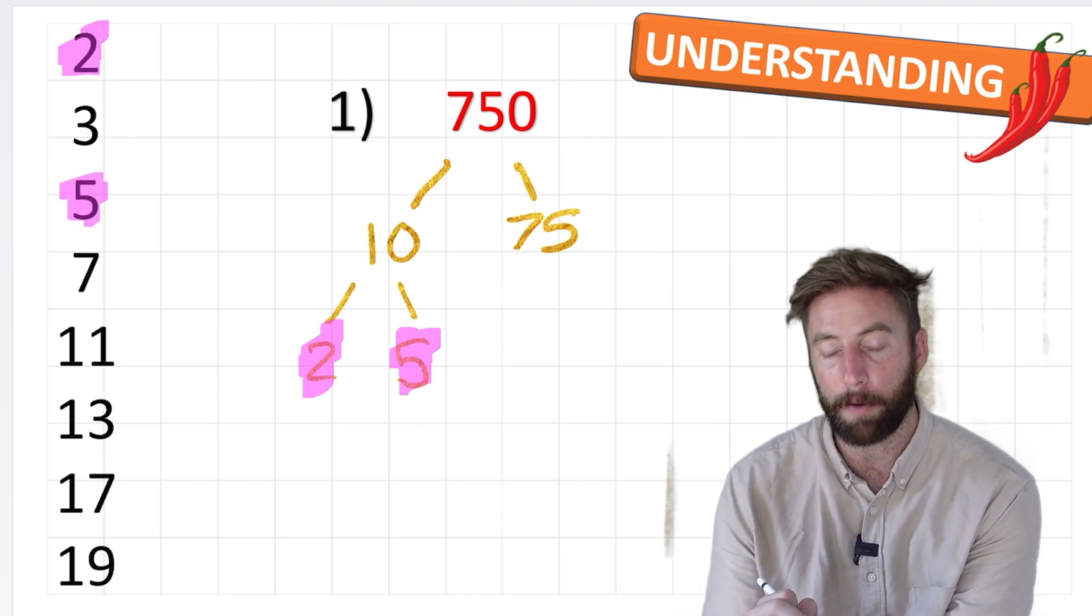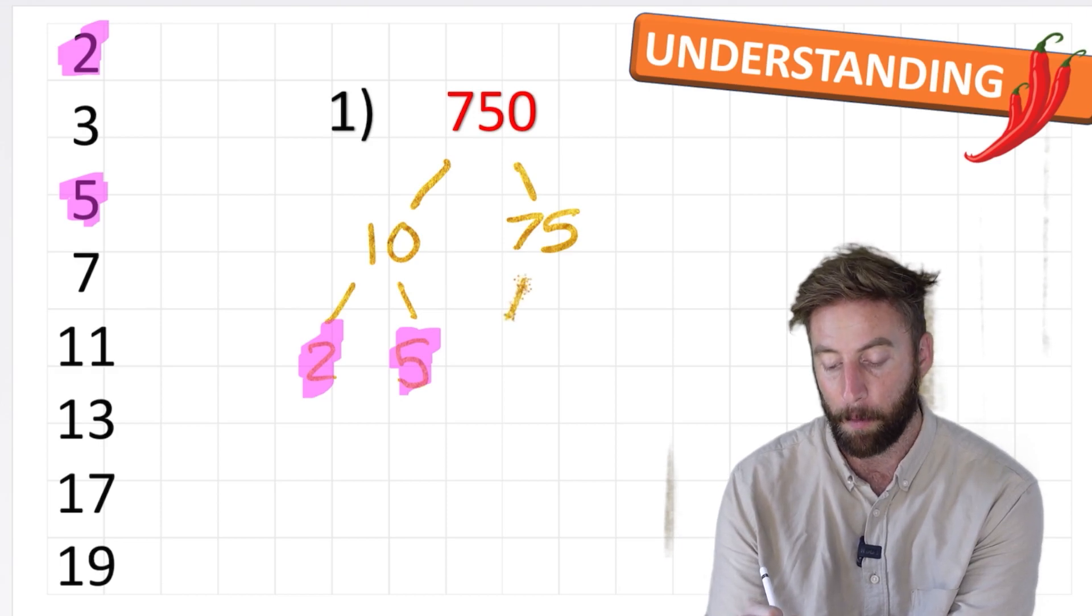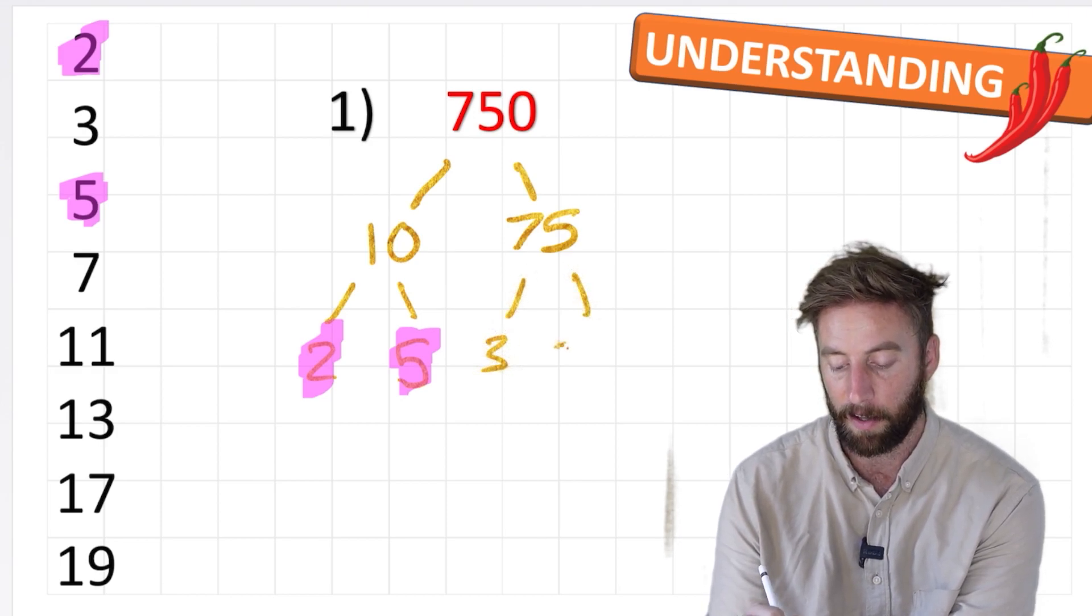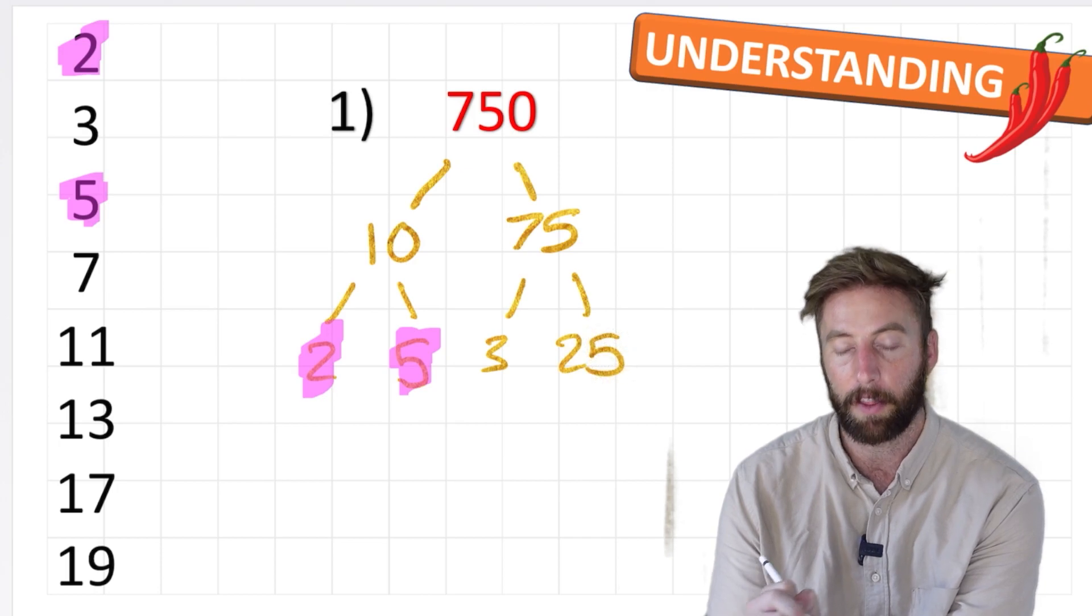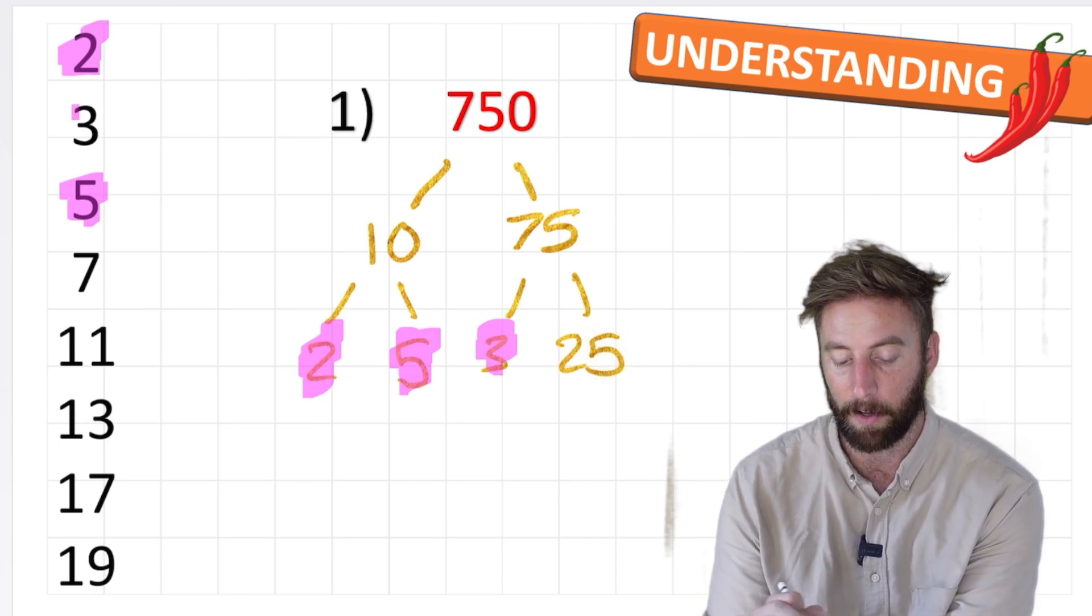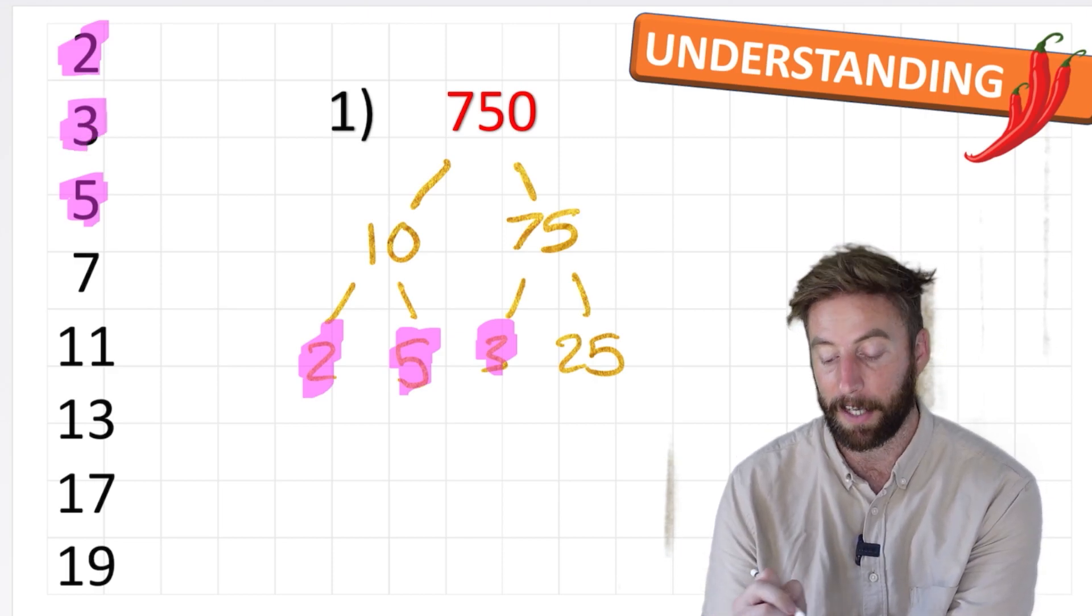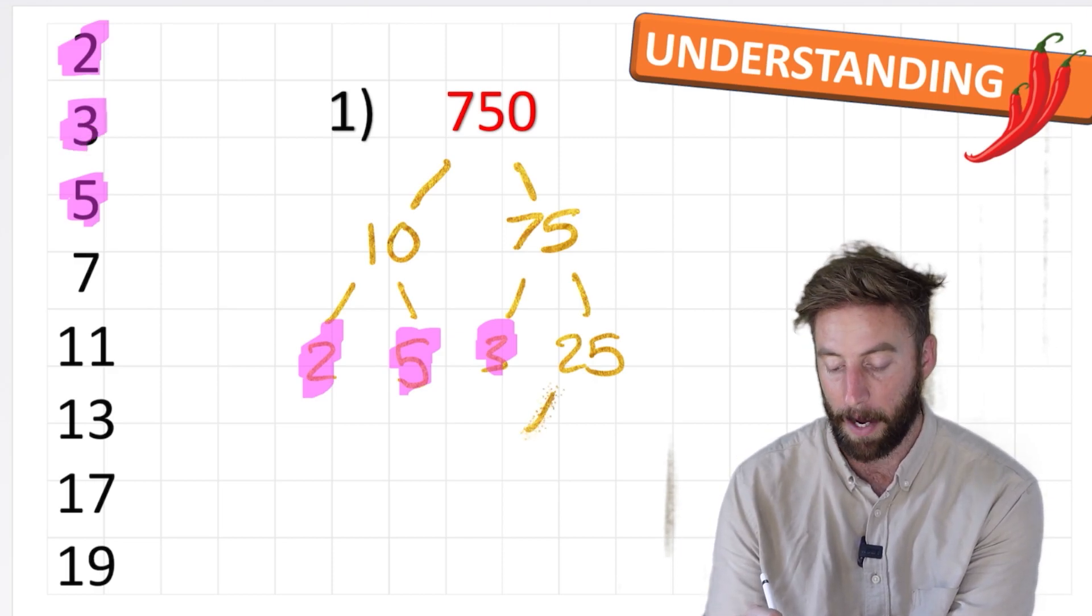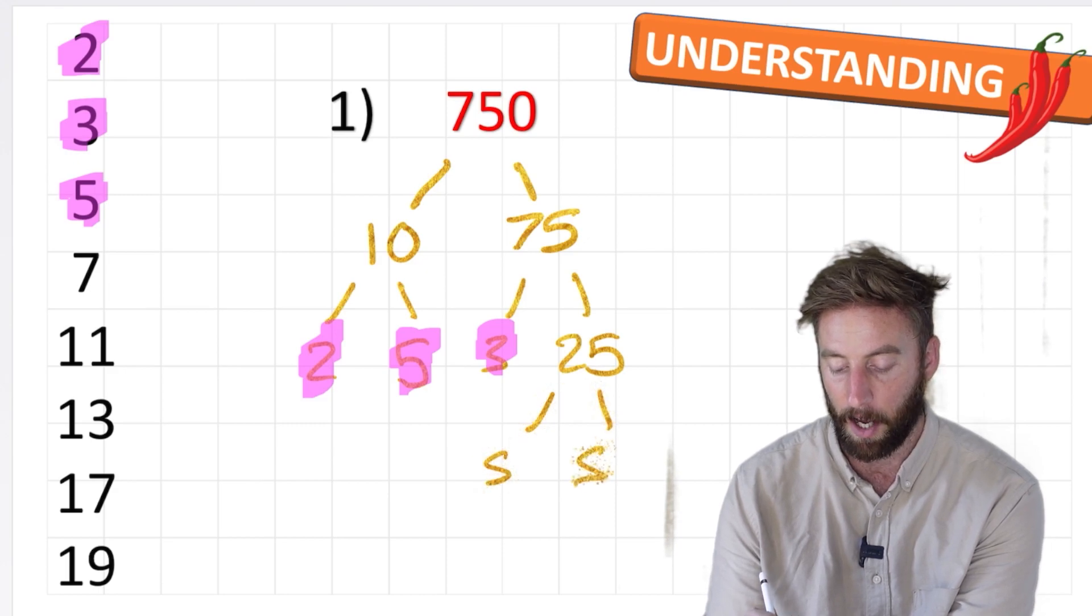Now, I can look over to the other branch and I can say 75. Well, 75 will be made up of 3 and 25. 3 times 25 is 75. And guess what? I found another prime number. But let's keep going with the 25 because that's not prime. 25 is made up of 5 times 5.